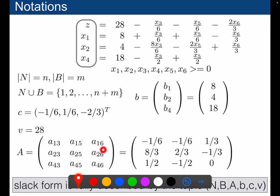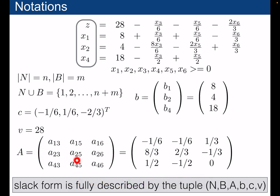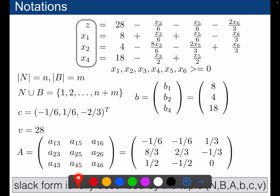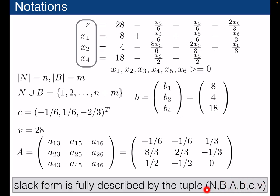A is equal here to the matrix of the coefficients that you have. So if you take this, you've got the matrix of coefficients. c will be the vector of objective coefficients. And b here is what we have, so this vector 8, 4, 18 will be the constants that you have here. And so the linear program is fully described by this tuple of matrices, variables, and vector of coefficients.